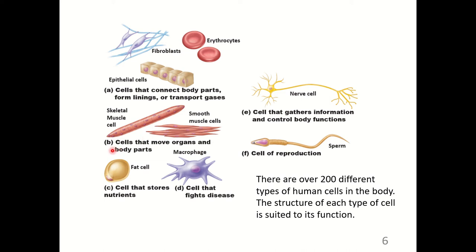Figure B shows cells that move organs and body parts — muscle cells are a great example. Figure C shows cells that store nutrients, such as fat cells. Figure D shows cells that fight disease, like macrophages, which are a type of white blood cell. Figure E shows cells that gather information and control body functions, like this multipolar nerve cell.